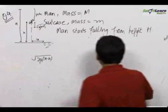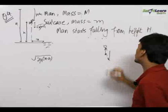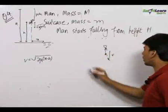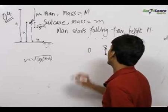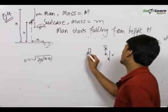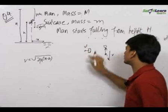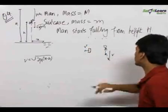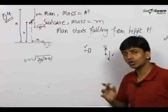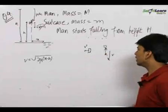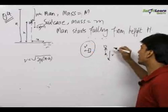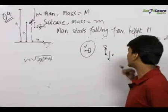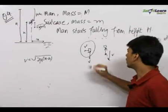Now when the man throws the bag, he is already going down with velocity v. He throws the bag relative to himself with a horizontal velocity v dash. The velocity of the bag with respect to ground will be the velocity of the bag with respect to man plus the velocity of man with respect to ground, that is v.